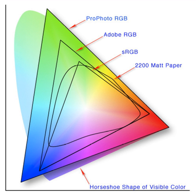RGB uses additive color mixing, because it describes what kind of light needs to be emitted to produce a given color. RGB stores individual values for red, green and blue. RGBA is RGB with an additional channel, alpha, to indicate transparency. Common color spaces based on the RGB model include sRGB, AdobeRGB, ProfotoRGB, SCRGB, and CIERGB.